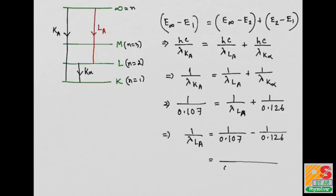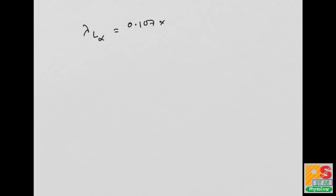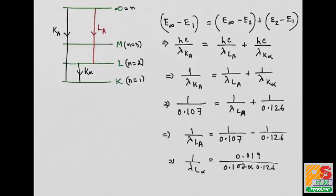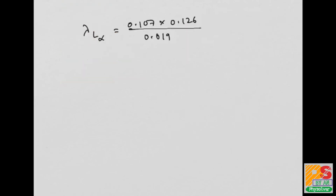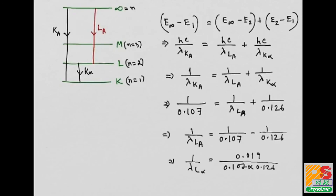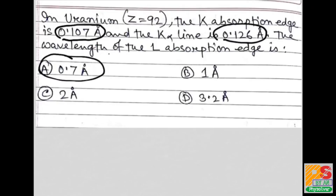On calculation, lambda L alpha comes out to be 0.597 angstrom. The answer corresponds to one of the given options, which is correct.